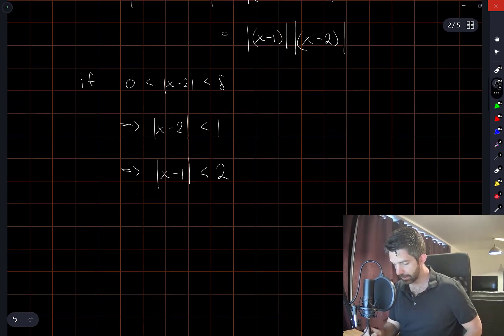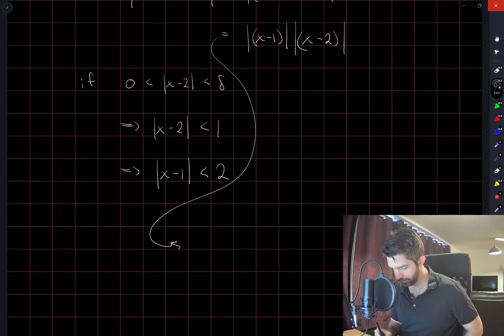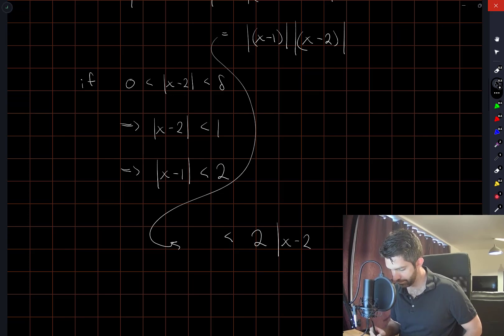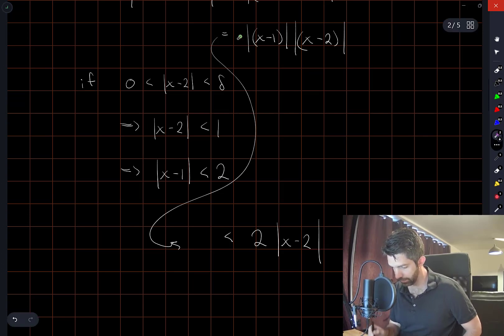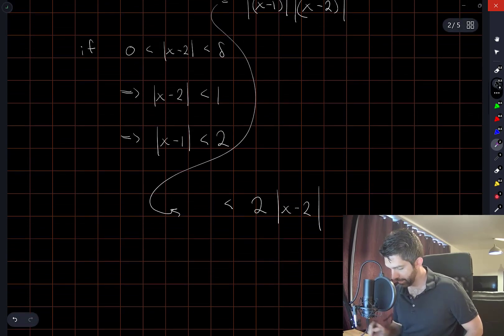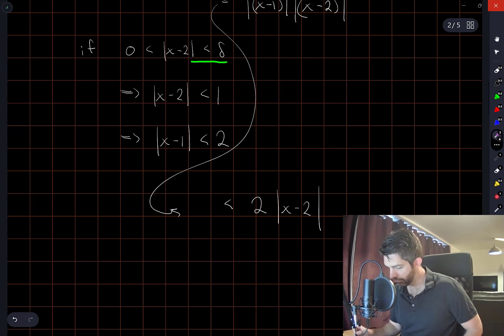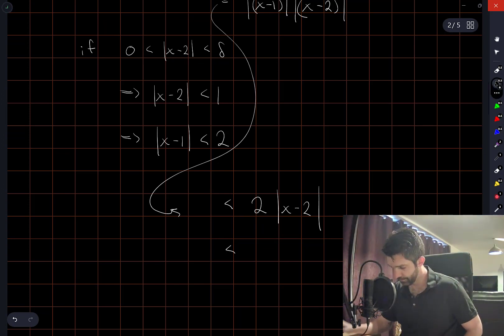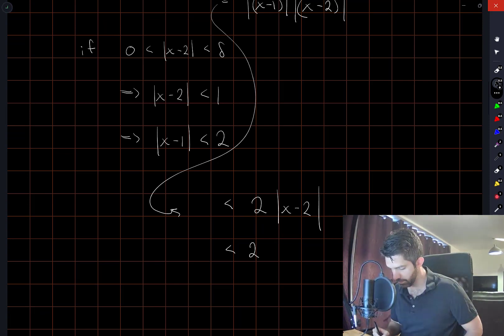So continuing from here, we can now replace the x minus 1 with 2 as long as we also replace the equality with an inequality. We also have that we're assuming that x minus 2 is less than delta. So this is less than 2 delta.